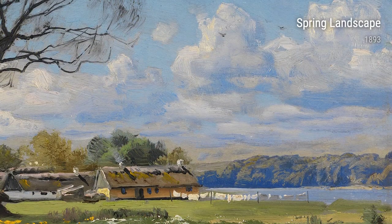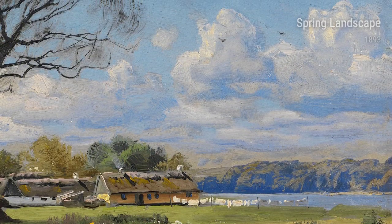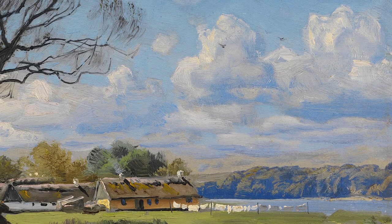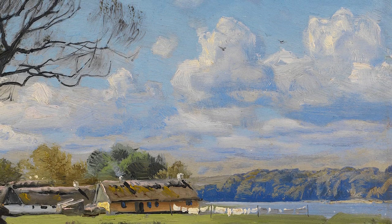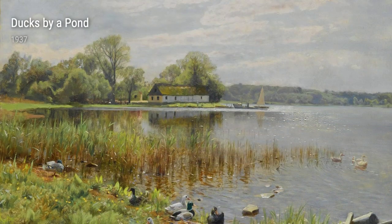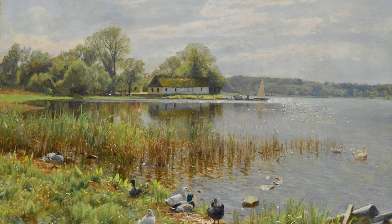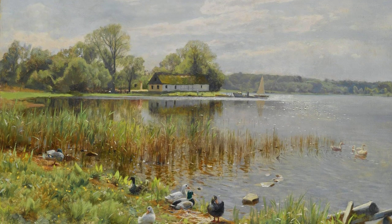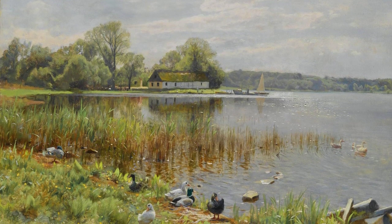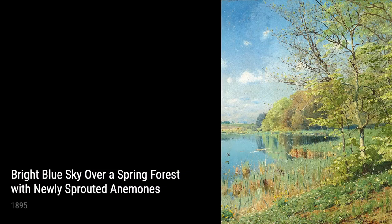Lastly, in 1937, Mönsted paints Walking the Dog on a country track in Himmelbjergit, depicting a simple yet charming moment of leisure in the countryside. And in 1939, Mönsted's entrance to Bielkestuen in Hornbeck transports us to a quaint village scene, inviting us to admire the simplicity and charm of rural life.